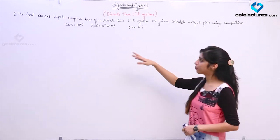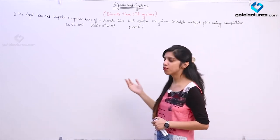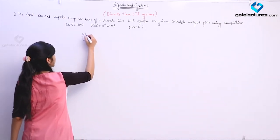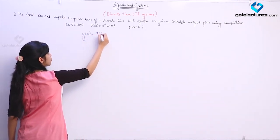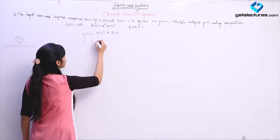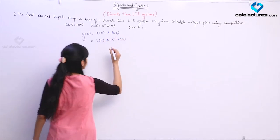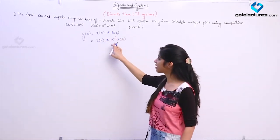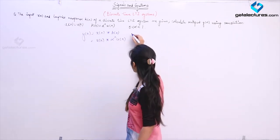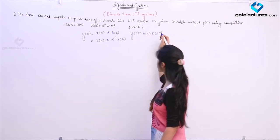Now they have given input u[n] and impulse response α^n · u[n], and they are asking you to calculate the output using the convolution integral. You know that output y[n] is given as the convolution of input x[n] with the impulse response h[n]. Since convolution is commutative, y[n] = x[n] * h[n] = h[n] * x[n].